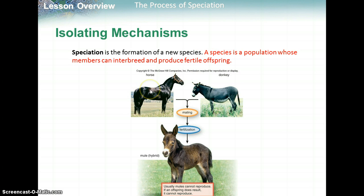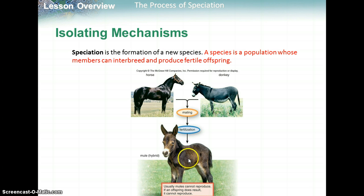When a horse and a horse reproduce, they make a horse that is fertile. A donkey and a donkey reproduce together, they make a fertile donkey. However, when you have the horse and donkey reproduce together, they make an infertile mule, so they are not considered the same species.